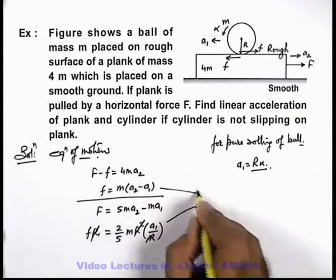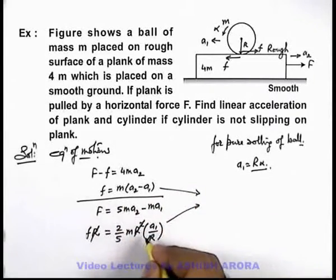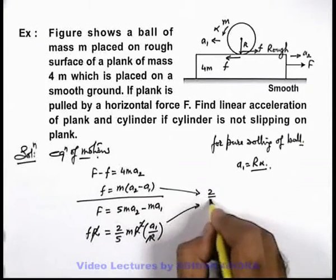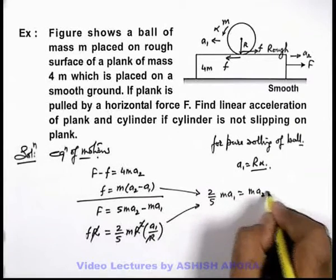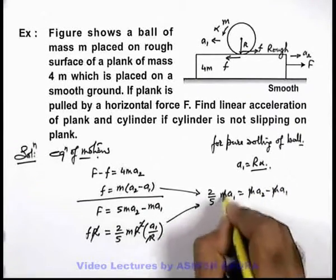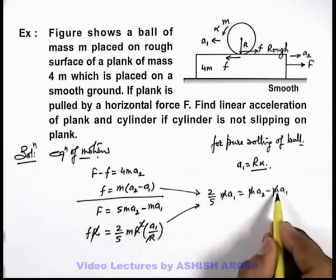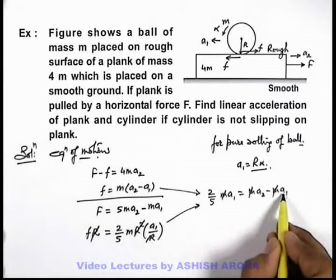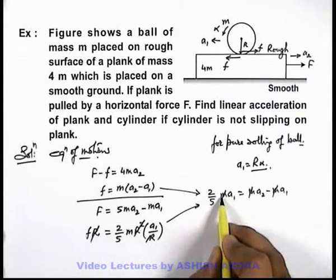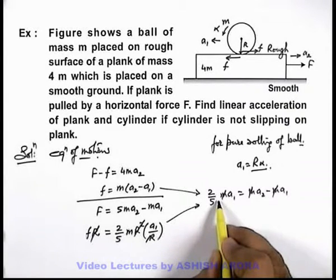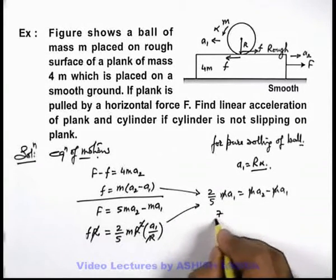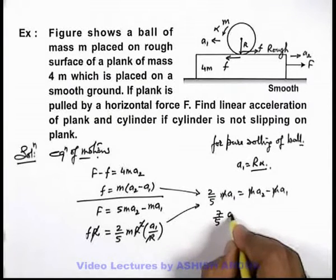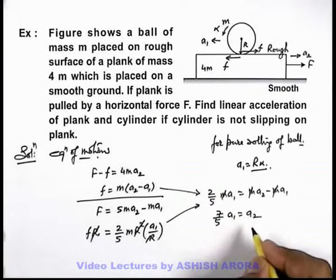Now from these two equations, by substituting the value of f, it'll be 2/5 ma₁ equals ma₂ minus ma₁. m gets cancelled out and by shifting this a₁ to left-hand side of equality, you can see that we'll get 2/5 plus 1 is 7/5, a₁ equals a₂. This relation we get here.